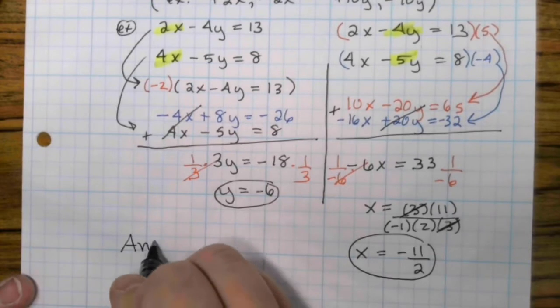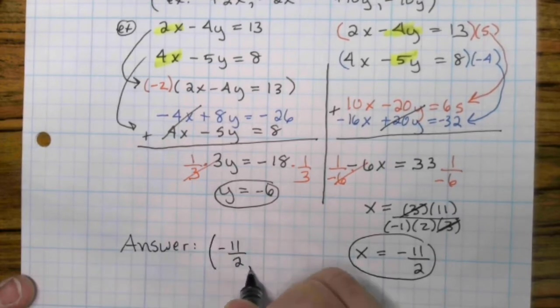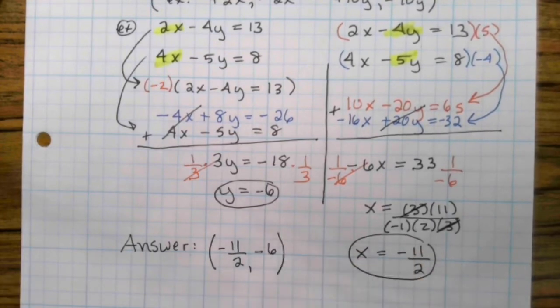So my answer is an ordered pair. Negative 11 halves, negative 6. And there you have it.